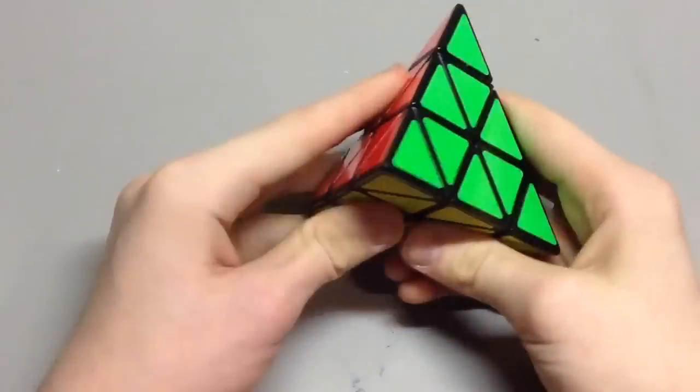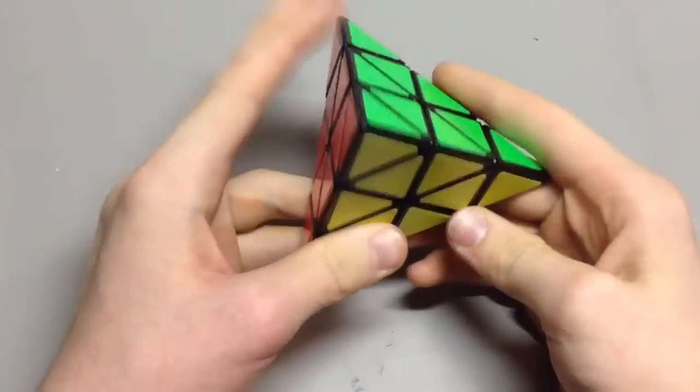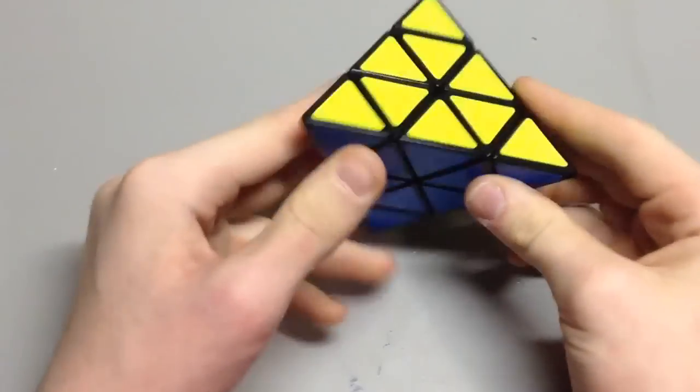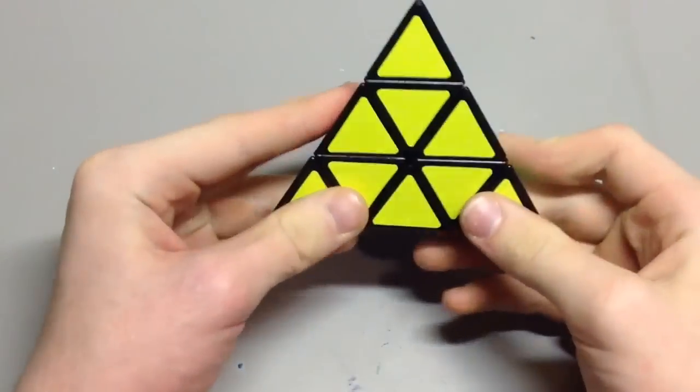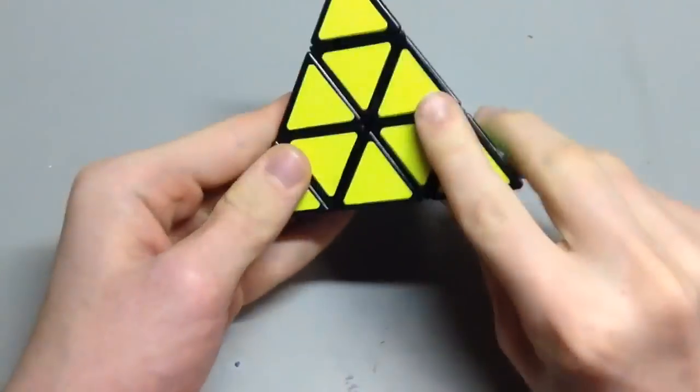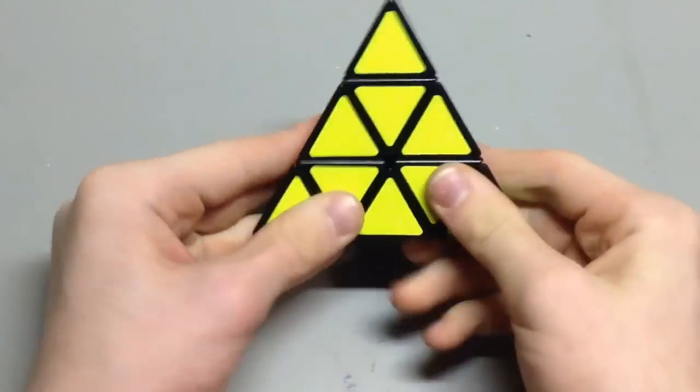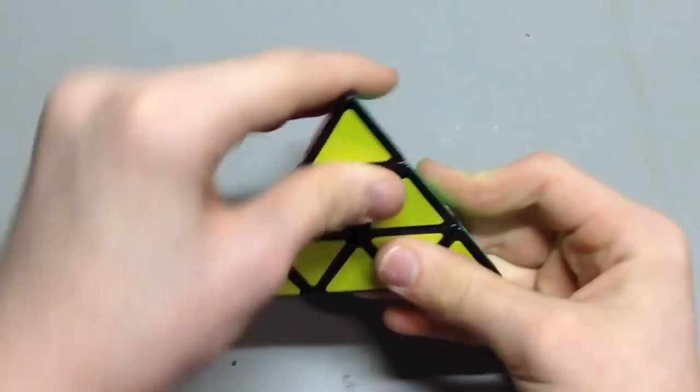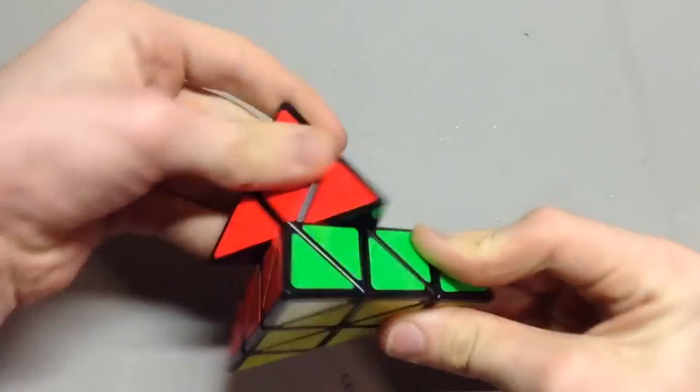This is a Pyraminx tutorial. To start off, just some basic notation stuff. You want to hold it so that you have it flat in front, and then this will be R, this will be L, U, and B.